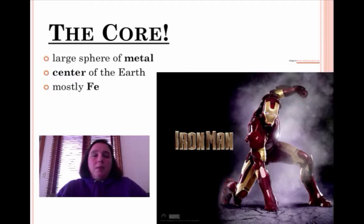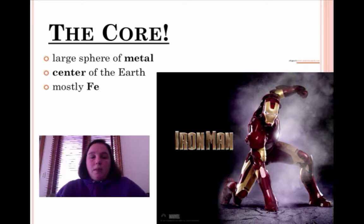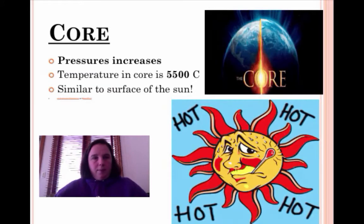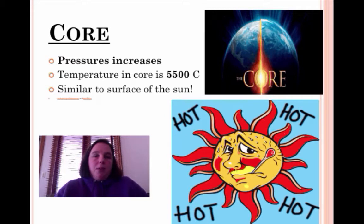So let's talk about the core. The core is a large sphere of metal at the center of the Earth, and it's made mostly of iron. In the core, the pressure increases tremendously and the temperature there is about 5,500 degrees Celsius.